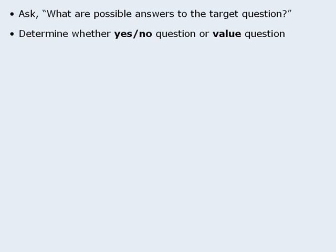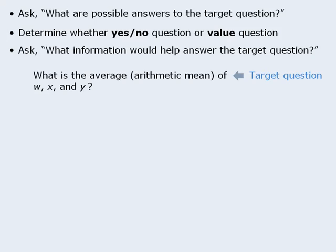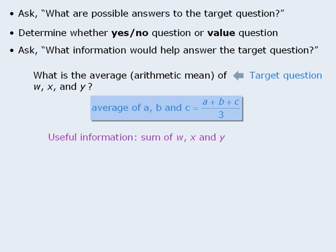Another strategy to consider when tackling data sufficiency questions is to ask, what information would help answer the target question? By considering information that would help answer the target question, you may gain some insight into what statements would be sufficient. For example, this target question asks, what is the average, or arithmetic mean, of the numbers w, x, and y? So what information would be useful to help us find the average of three numbers? Well since the average of three numbers is found by adding the three numbers and dividing by three, it would be useful to know the sum of w, x, and y. If we knew the sum, then we could take the sum and divide it by three, to find the average. Of course there are other pieces of information that might also help us find the average. Our goal with this strategy is to identify some information that would be sufficient to answer the target question.